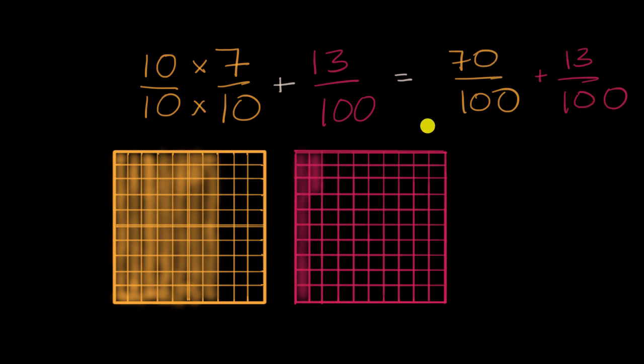So this is going to be 70, let me do it in the same color, this is going to be equal to 70 plus 13, plus 13 hundredths. 70 plus 13 hundredths, and what's 70 plus 13?